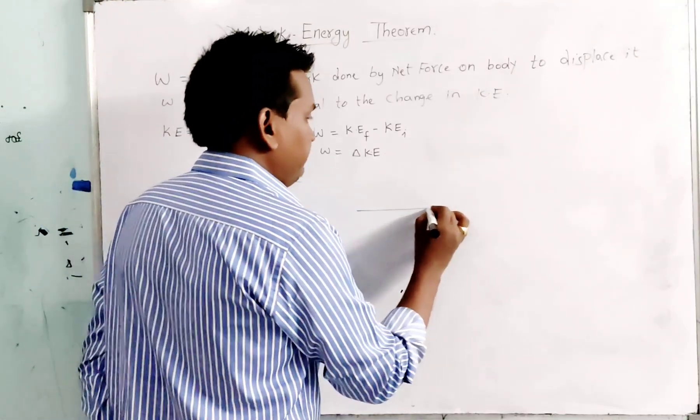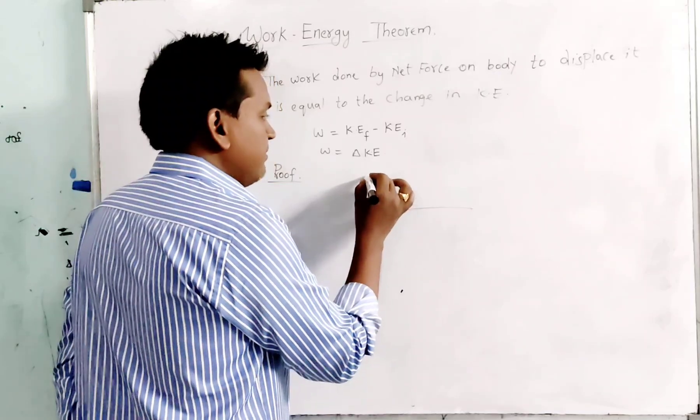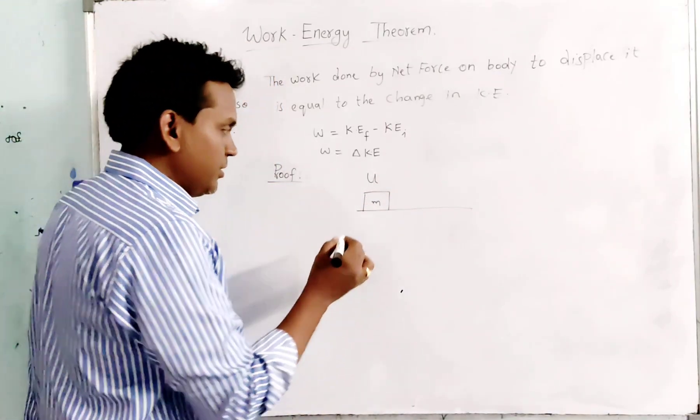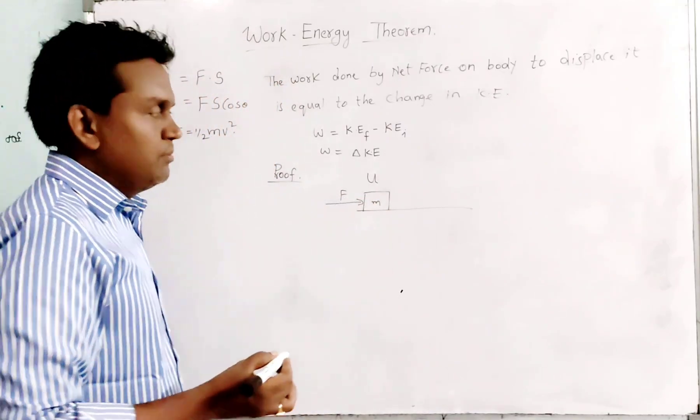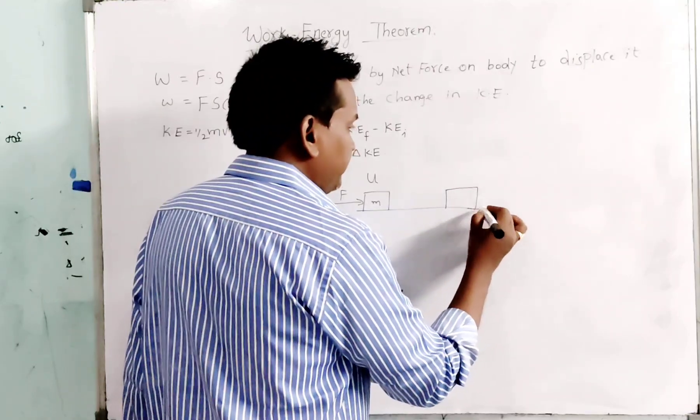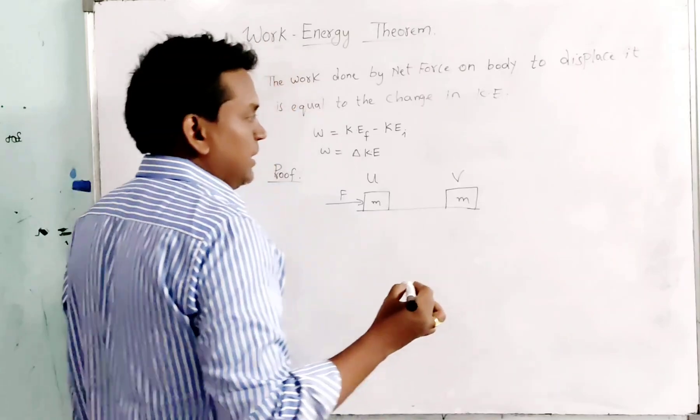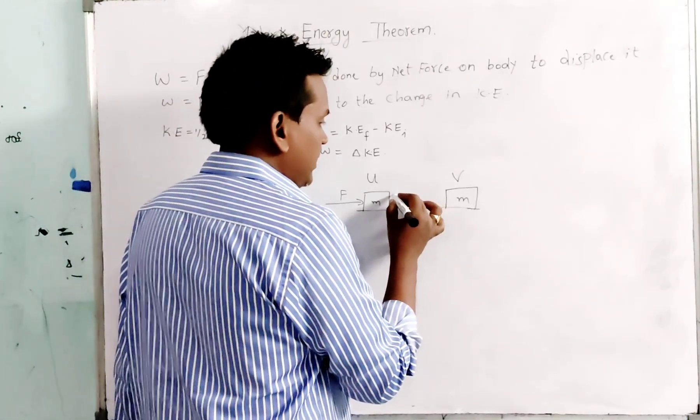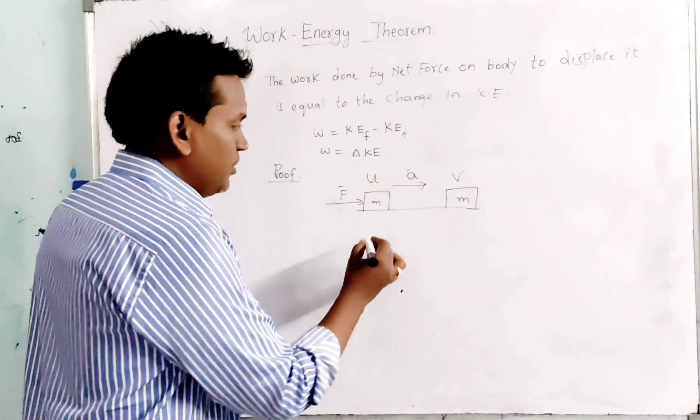Proof. Consider a mass having an initial velocity U. A force F is acting on the body. Due to the application of force, the body is displaced and it acquires a velocity of V. Throughout this journey, it has an acceleration A due to the application of force.